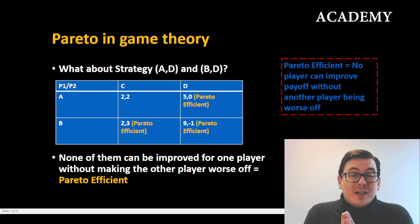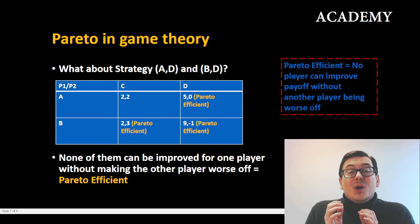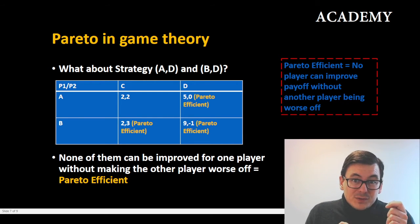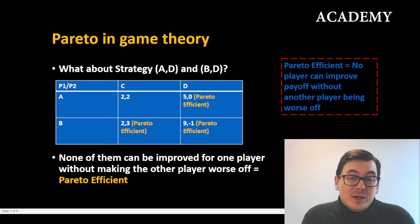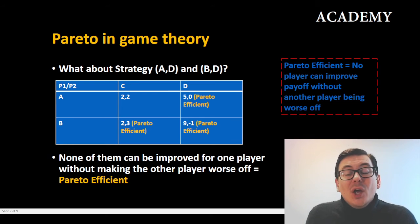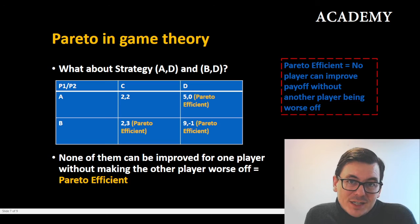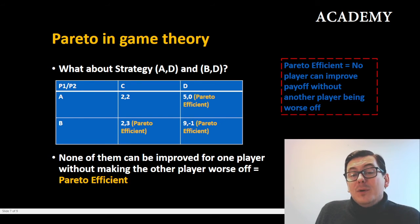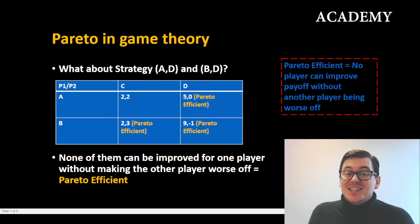We cannot move anywhere from AD without hurting either player one or player two, therefore it is also a Pareto efficient strategy. The same applies to strategy BD. So in this game there is actually only one strategy that does not equal a Pareto efficient status, and that is strategy AC.